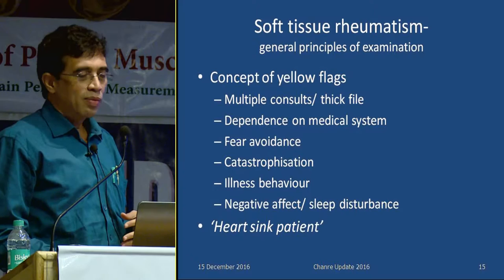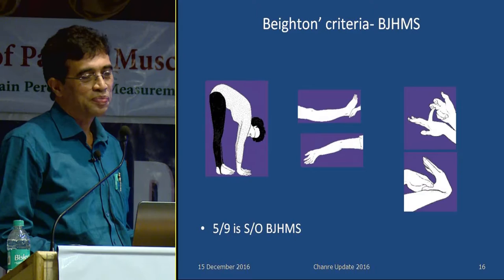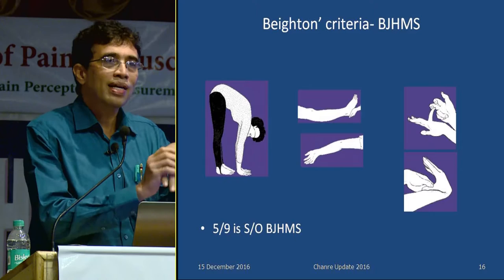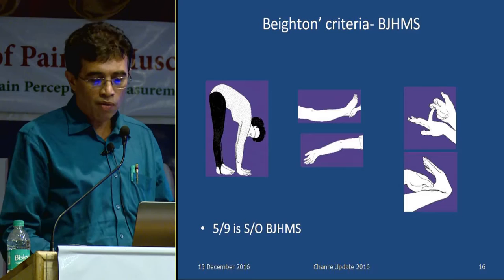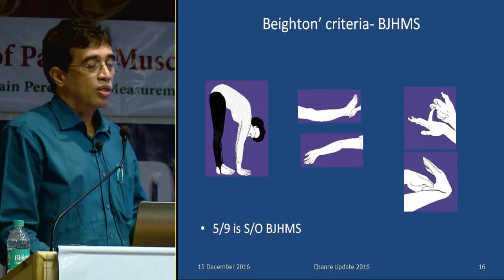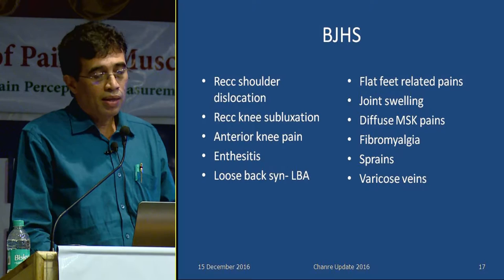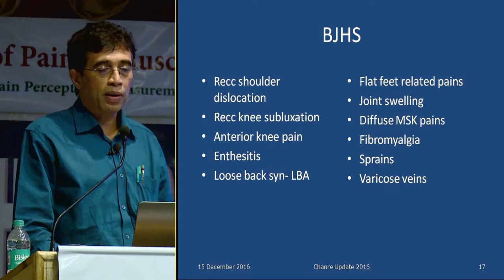When examining joints, always look for hypermobility — we tend to look for restricted joints, but hypermobile joints also contribute to recurrent shoulder dislocations or subluxations, anterior knee pain, patellofemoral arthritis, and buckling episodes. These patients are also prone to enthesitis, flat foot, exaggerated lordosis, weak abdominal muscles, and back pain. They can have intermittent joint swellings and are more prone to fibromyalgia, diffuse pain, sprains, sports-related injuries, and varicose vein-related leg pain.